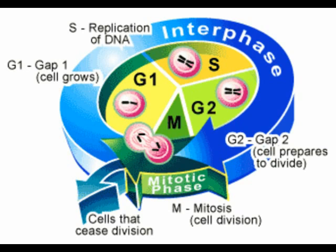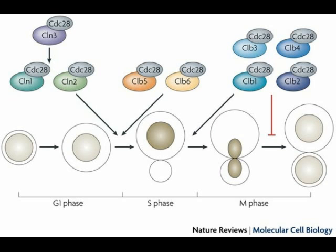During mitosis, daughter chromosomes are distributed to two daughter nuclei. When division of the cytoplasm is complete, two daughter cells are present. The cell cycle is controlled by internal and external signals. A signal is a molecule that stimulates or inhibits a metabolic event. These signals ensure that the stages follow one another in the normal sequence, and that each stage is properly completed before the next stage begins.